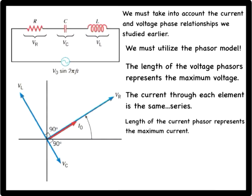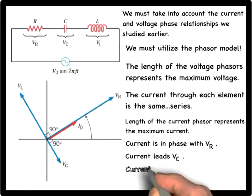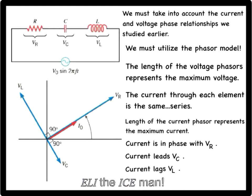Notice that the drawing shows the current phasor is in phase with the voltage phasor for the resistor, the current is leading the voltage phasor for the capacitor by 90 degrees, and the current is lagging behind the voltage phasor for the inductor by 90 degrees. This is consistent with our mnemonic, ELI the ICE man.